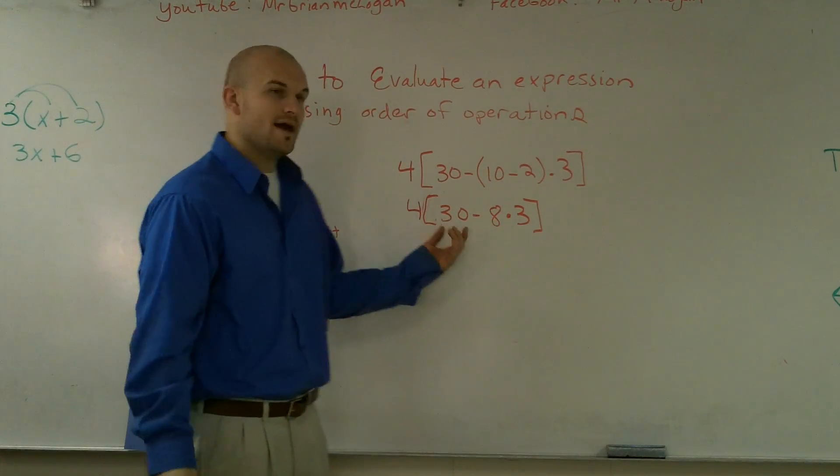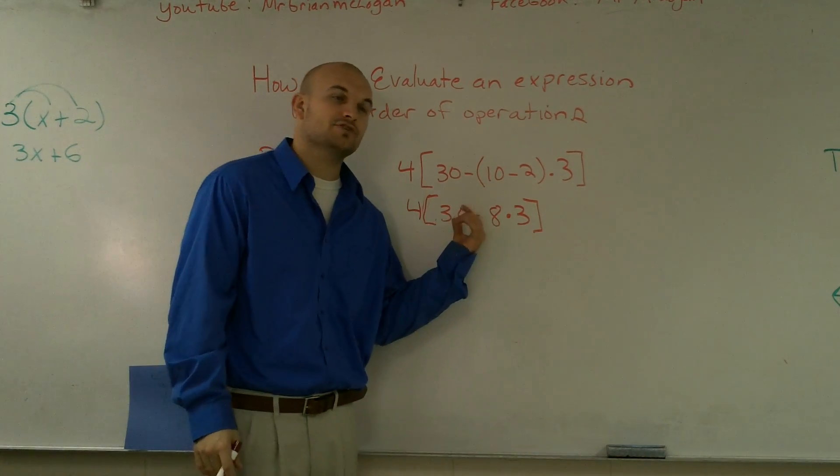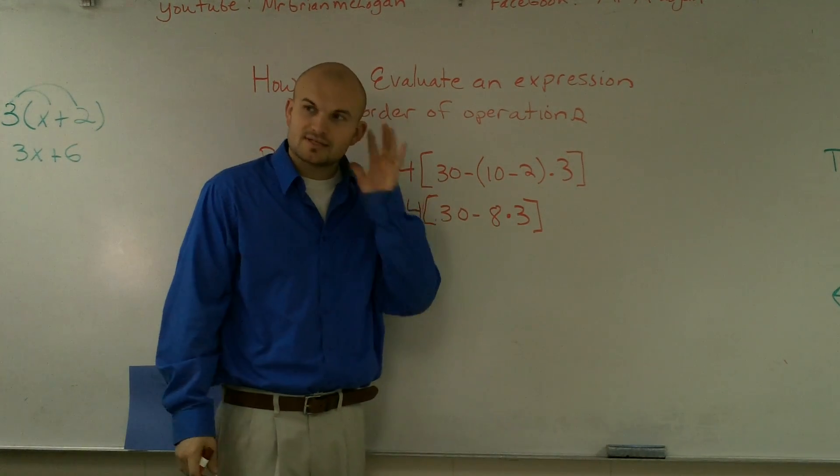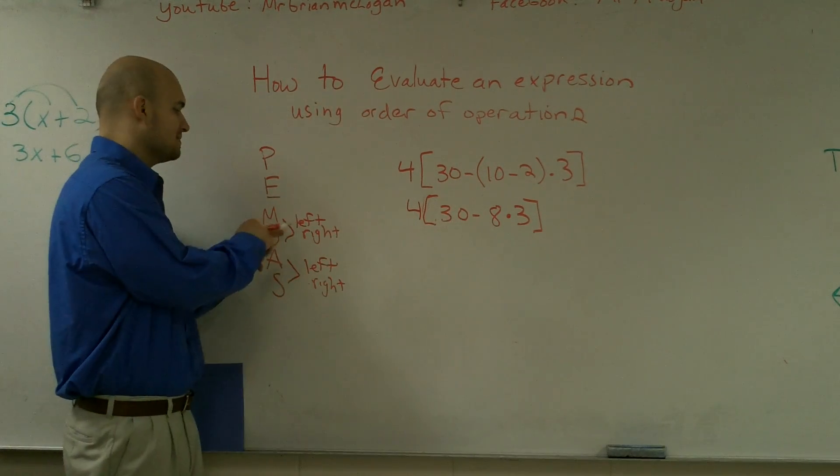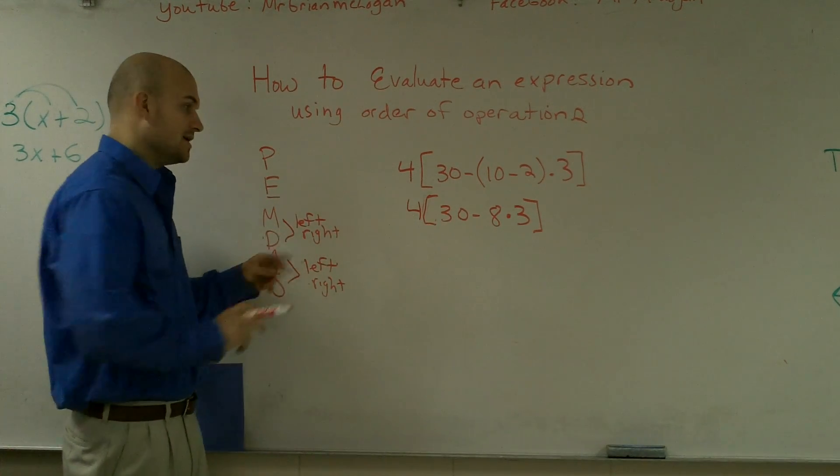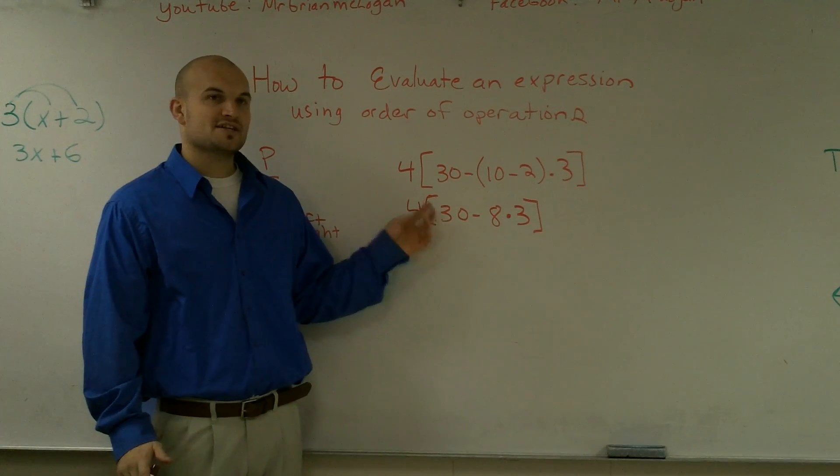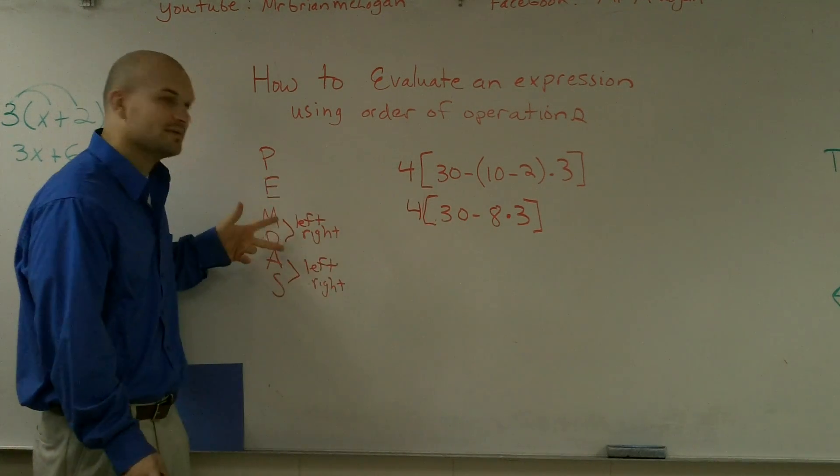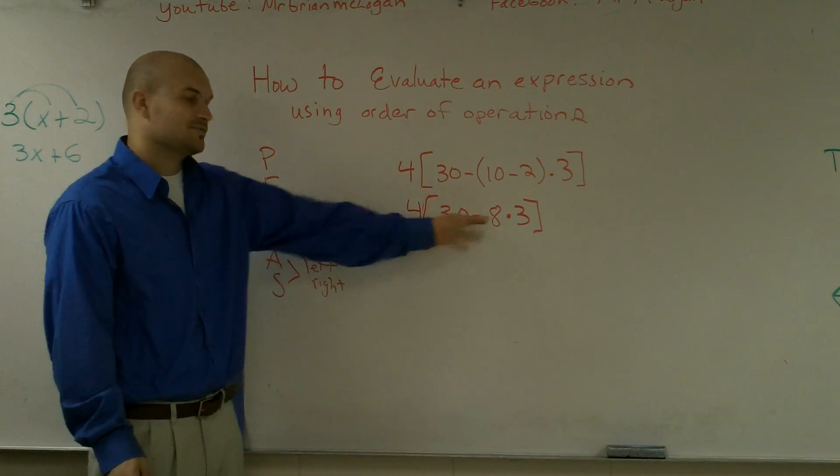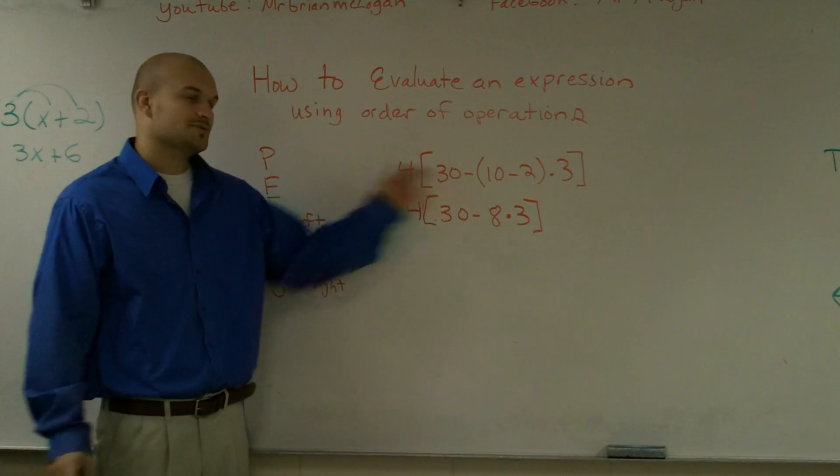Now I look at this and now I have a choice either to do subtraction or multiplication. Since I'm following the order of operations, it says to do multiplication first. Now you might say, well, subtraction is to the left. It doesn't matter. Since multiplication division is first, that's what you're going to do on your order of operations. That's what you have to do first.